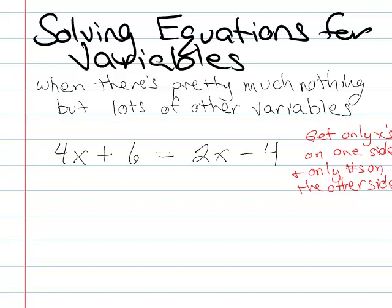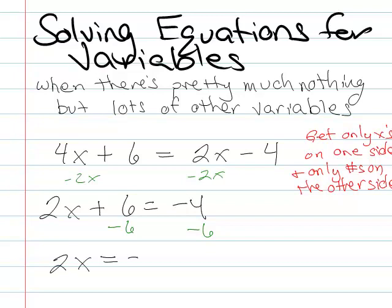First of all, you're going to get only x's on one side and only numbers on the other side. So I'm going to move all my x's over here to the left, so I'll subtract 2x from both sides and I'll get 2x plus 6 equals negative 4. Now I want to move all my numbers to the other side, so I'll get 2x equals negative 10.